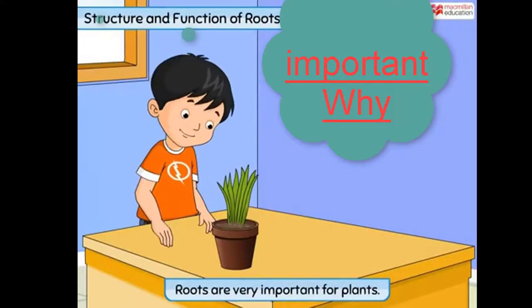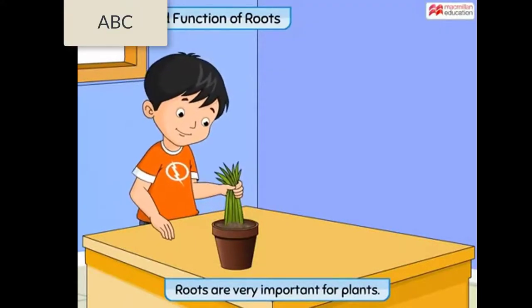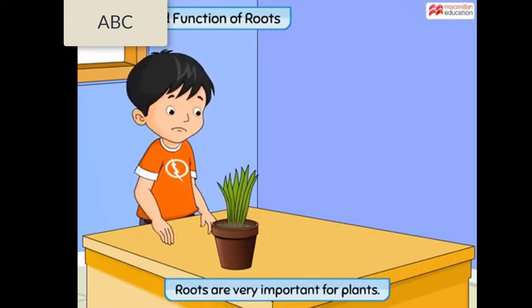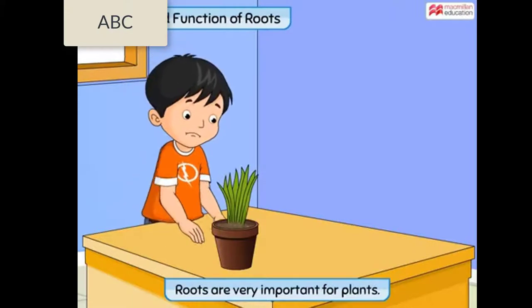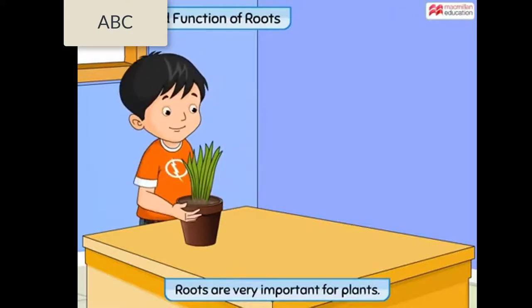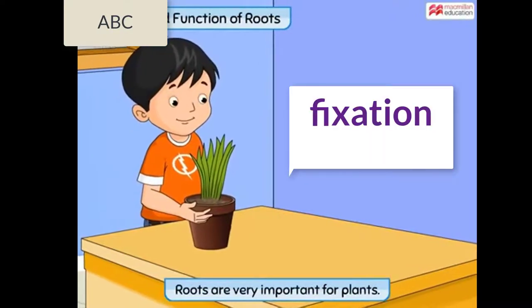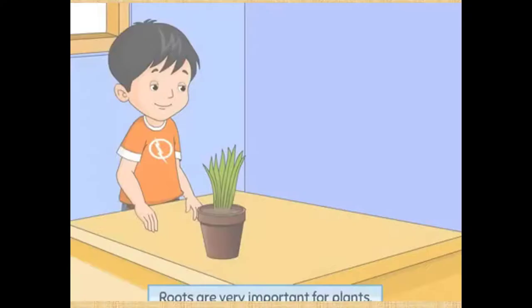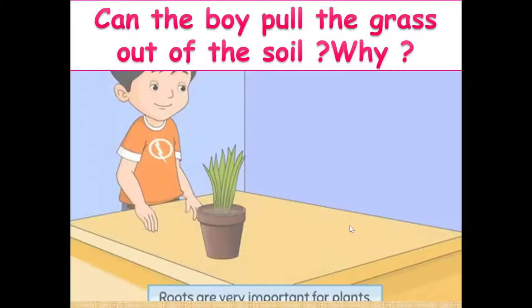Look at this boy trying to pull out a bunch of grass from the soil. He tries to pull the grass but the plants do not come out easily and the boy ends up lifting the pot. This shows that roots of the grass plants are holding them firmly in the soil. Can he pull out the grass from the soil? Of course not.